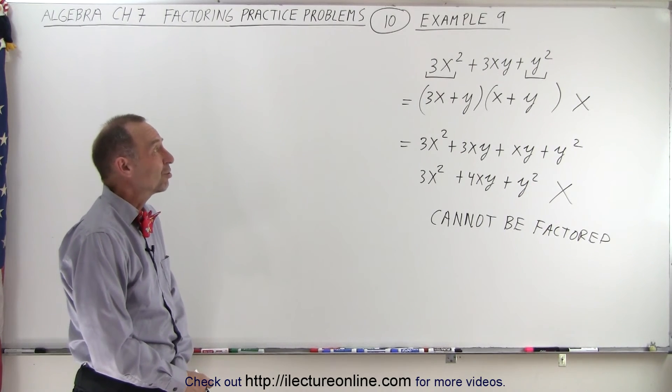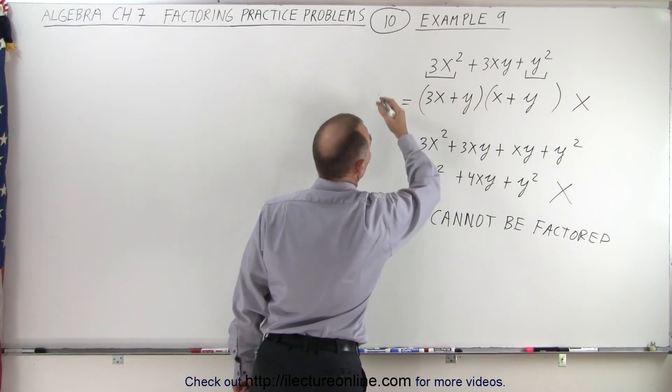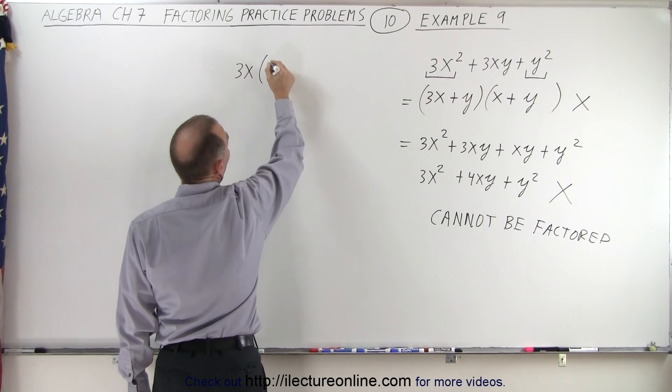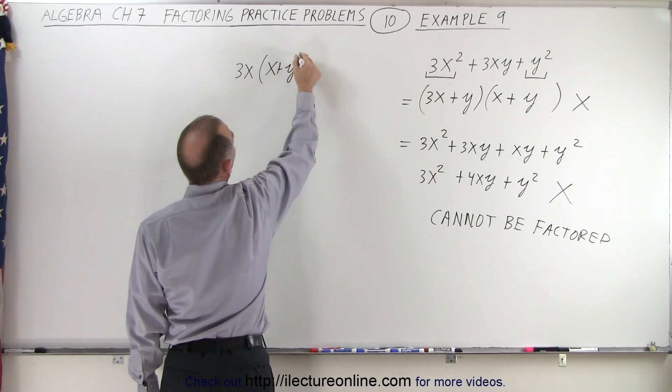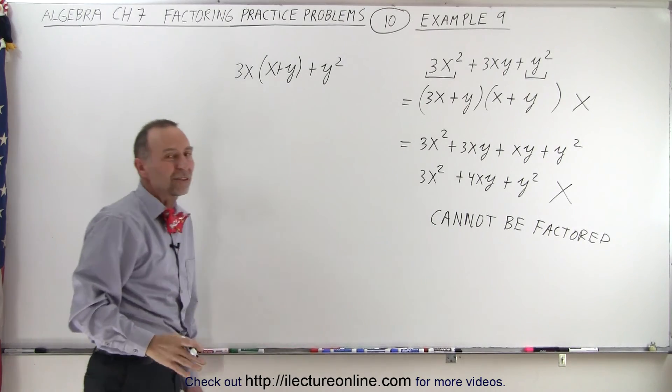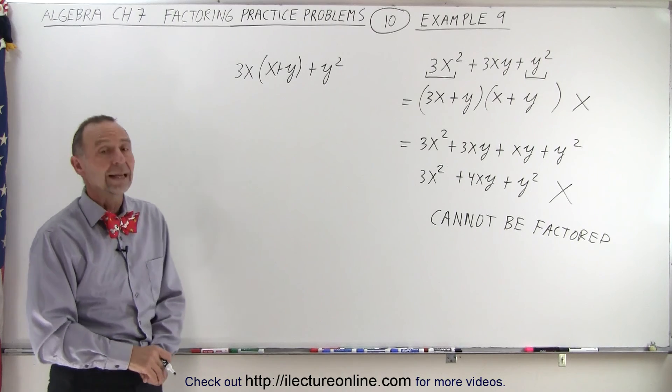We could potentially try to group something. For example, if you take the first two and you factor out 3x, see what we get. So that would be 3x times x plus y plus y squared. But then that doesn't really get you anywhere. So that's really not what you want to do. We simply say it cannot be factored.